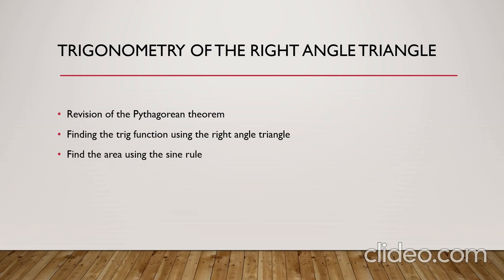After that we will introduce one of the important rules to find an area of any triangle, which is called the sine rule. Using this rule, we can find the area of any triangle even if we don't have a right angle between any two sides. The area of the triangle using this rule is equal to half AB sine theta, where AB are any two sides in the triangle and theta is the angle between these two sides.